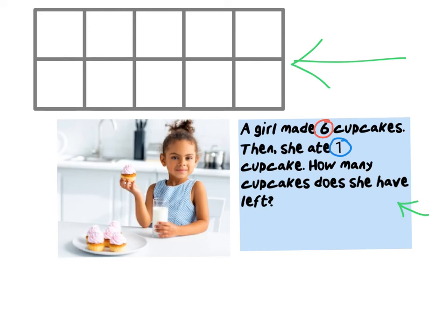And I'm looking for how many cupcakes she has left. You can already start to draw your circles and solve the problem, but I like to make the number sentence first. Six minus one, because she ate one, equals blank.